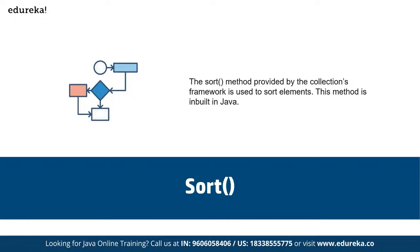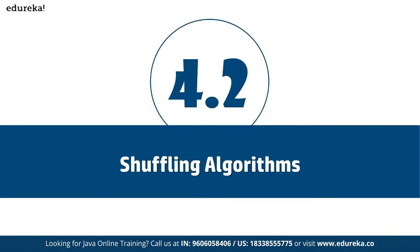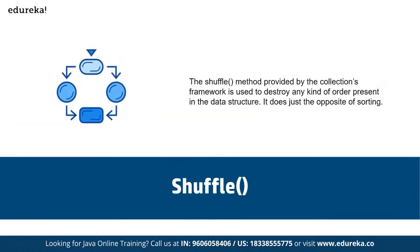Bubble sort is the simplest sorting algorithm. It repeatedly steps through the list to be sorted, compares each pair of adjacent elements, and swaps them if they are in the wrong order. Bubble sort gets its name because it filters elements to the top of the array like bubbles floating in water. After sorting, we have the shuffling algorithm — the shuffle method from the collections framework is used to destroy any kind of order present in a data structure, doing just the opposite of sorting.